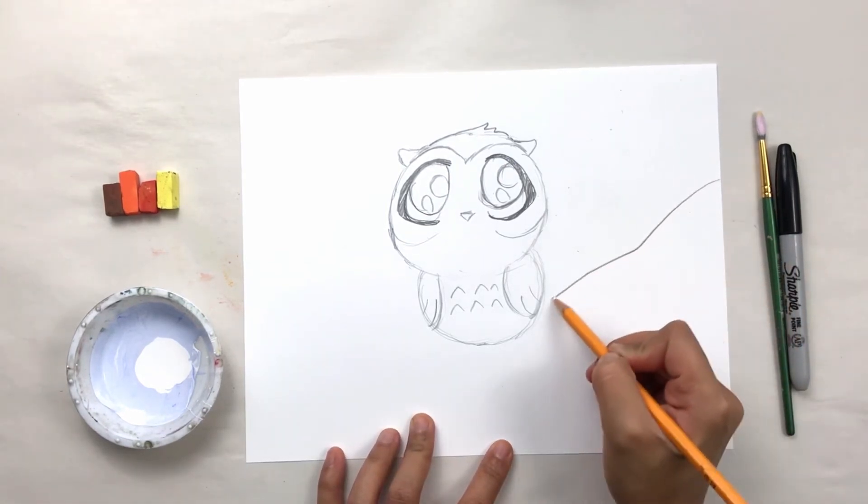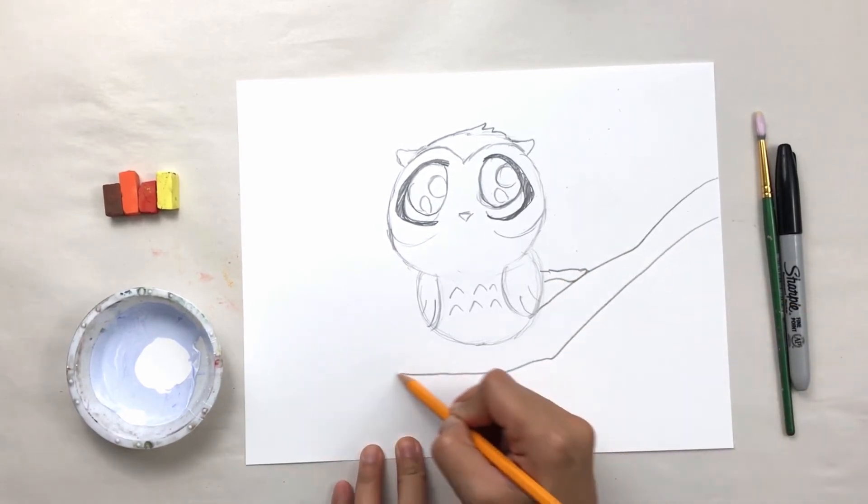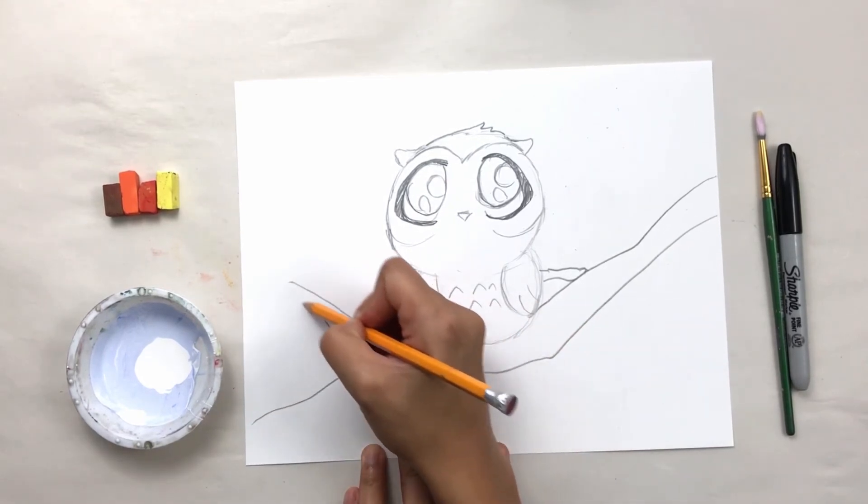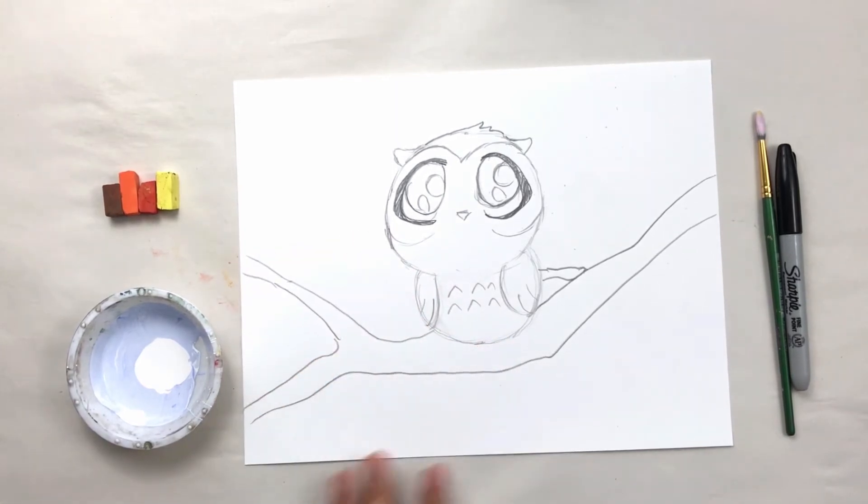Now from here, let's add a little bit of kind of where he lives. So I'm adding a tree branch. You can make this tree branch however you want. I'm going to come down. Cool.